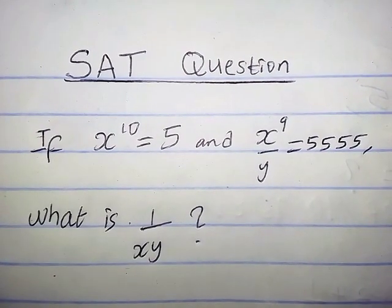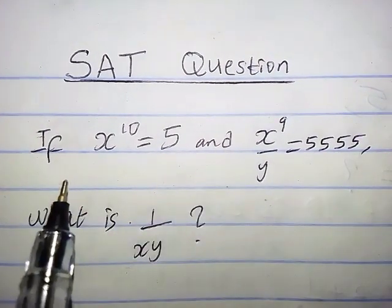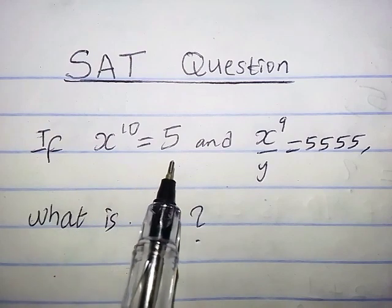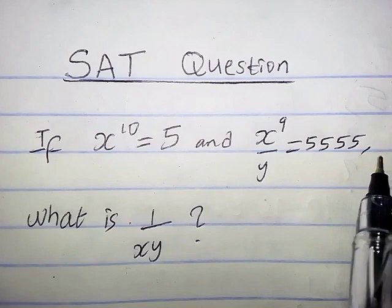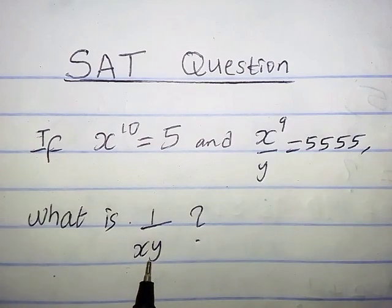Hello guys, welcome back. We have an SAT math question here. The question says: if x raised power 10 equals 5 and x raised power 9 over y equals 5555, what is 1 over xy? How do we solve this kind of question?